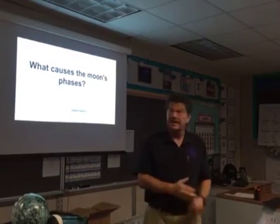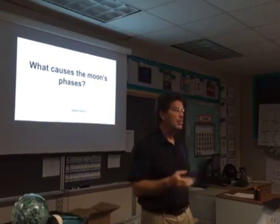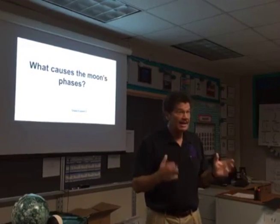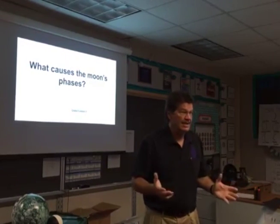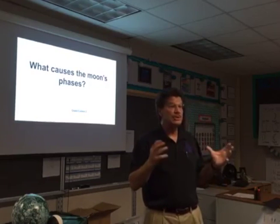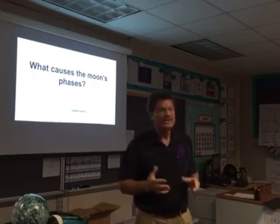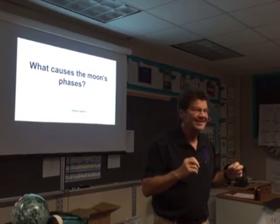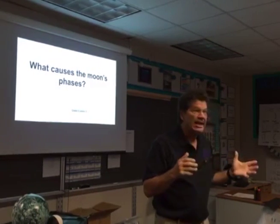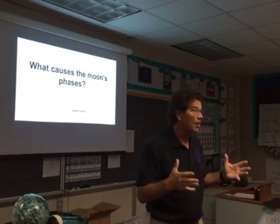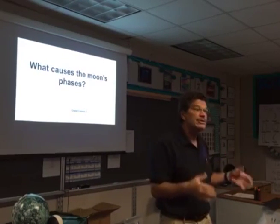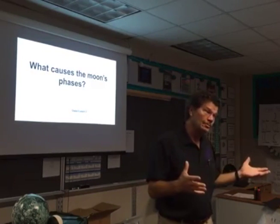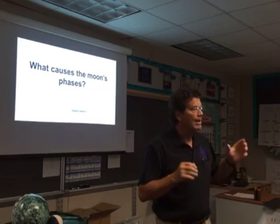Today's lesson is what causes the moon's phases. The moon, like the earth, reflects light. The sun is a source of light. The earth does have some light sources — if you're up in space you see lightning, forest fires, or city lights that cause light. But the moon has no light of its own.